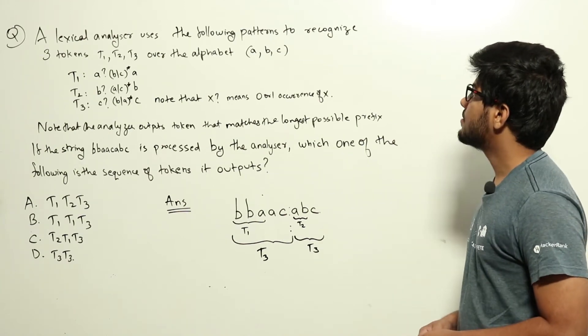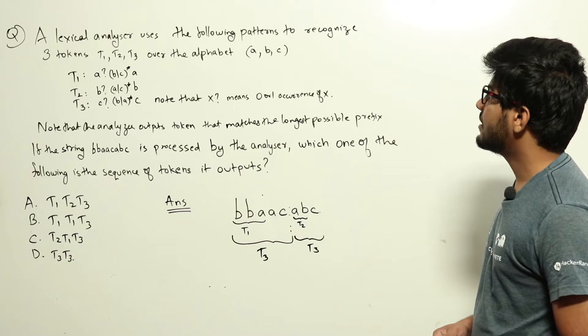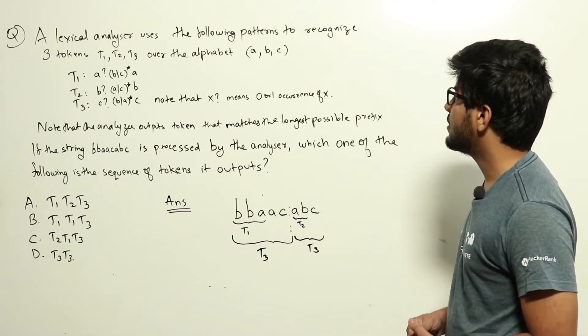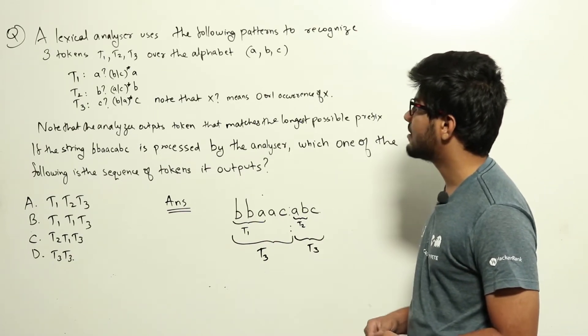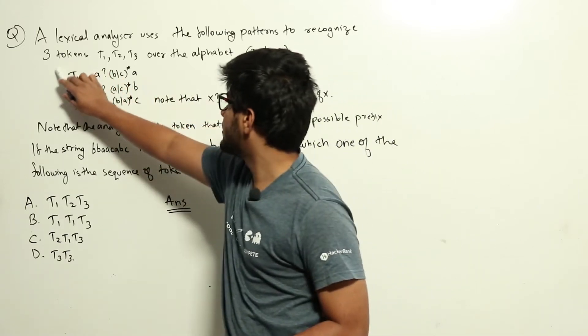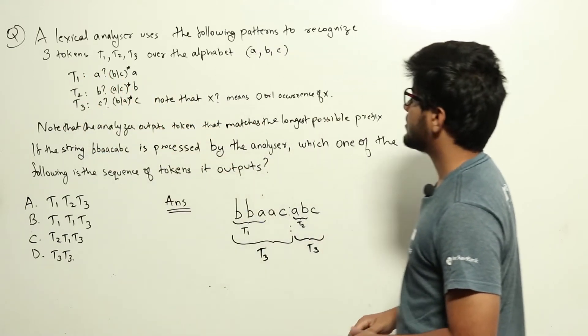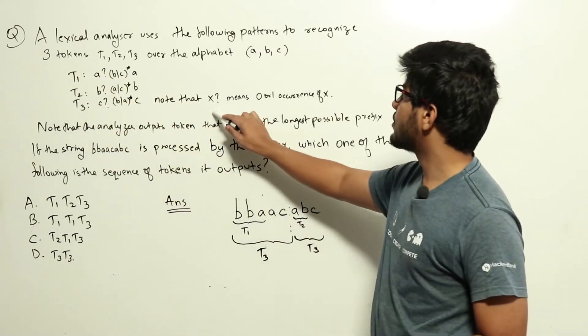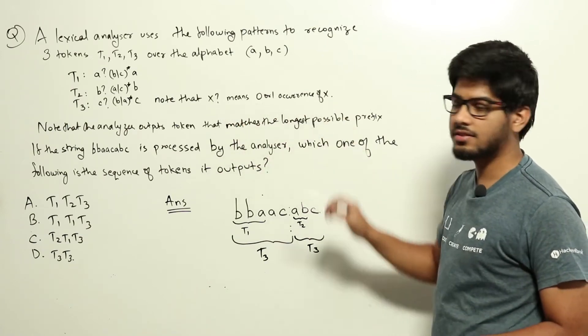A lexical analyzer uses the following patterns to recognize three tokens T1, T2, T3 over the alphabet a, b, c. These are the three lexical analyzers used here. Note that x question mark means zero or one occurrence of the symbol x.